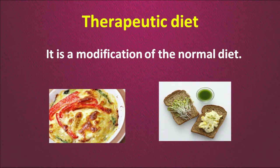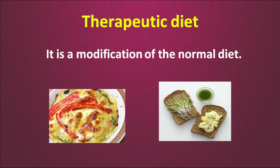Therapeutic diet is a modification of the normal diet. In these two pictures you can see bread with a very rich coating, but when the same thing is given with certain modifications — sprouts with a small spread — it shows that the same diet can be modified into a therapeutic diet. That is what we call a therapeutic diet.